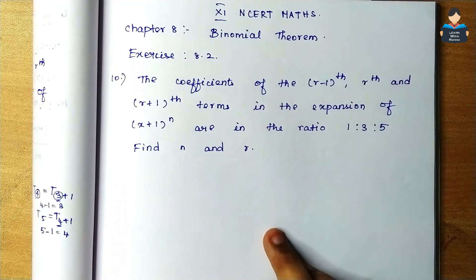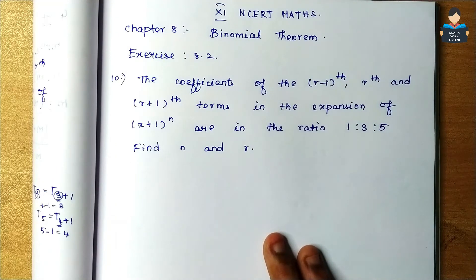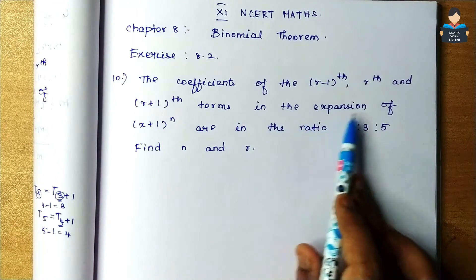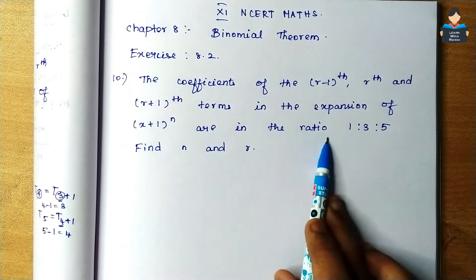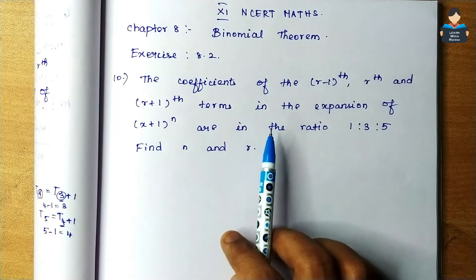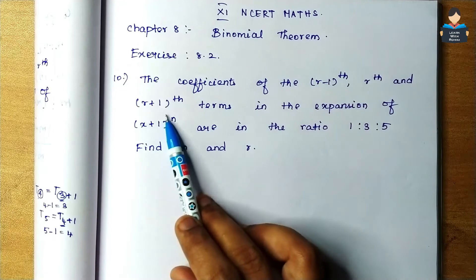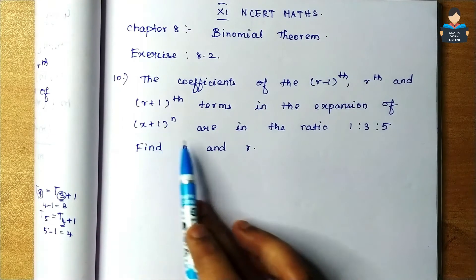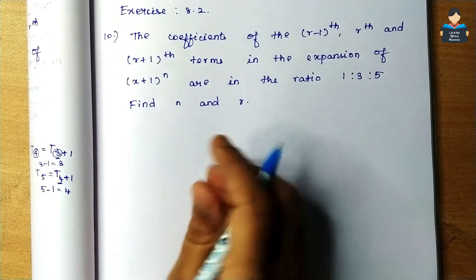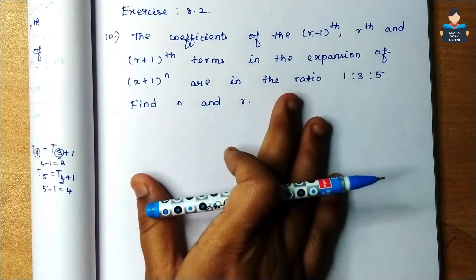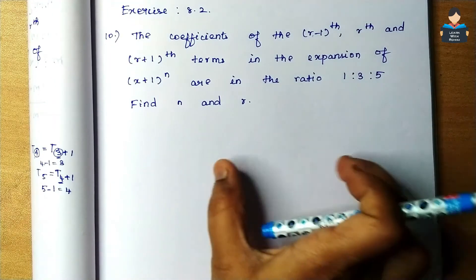Hello everyone, welcome to our channel. In this video, 11th standard NCERT Maths Chapter 8 Binomial Theorem Exercise 8.2, 10th sum. We need to find the coefficients of the (r-1)th term, rth term, and (r+1)th term in the expansion of (x+1)^n are in the ratio 1:3:5. We need to find n and r. In this problem, we are given that the ratio of three terms is 1:3:5 and we need to find the values of n and r.